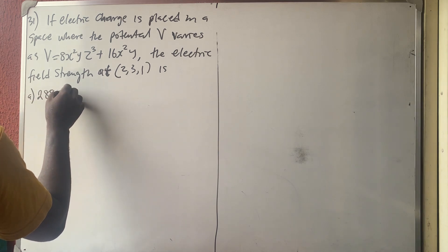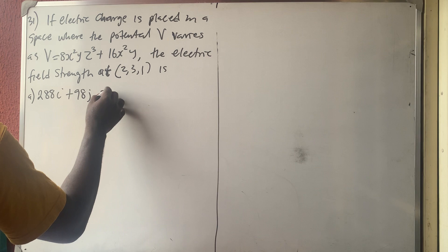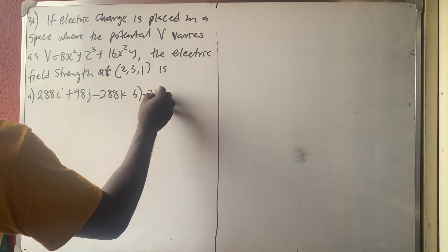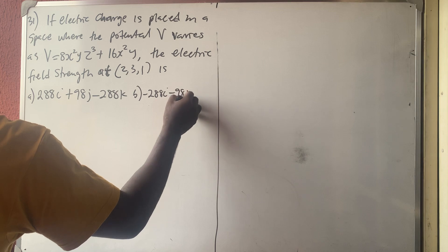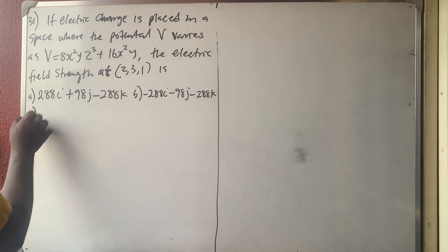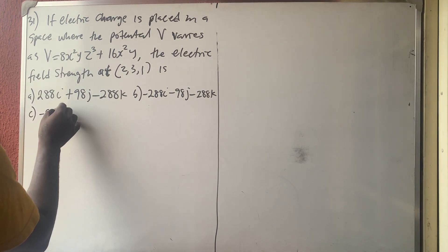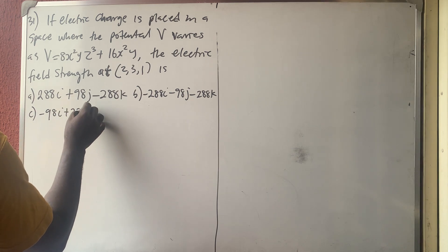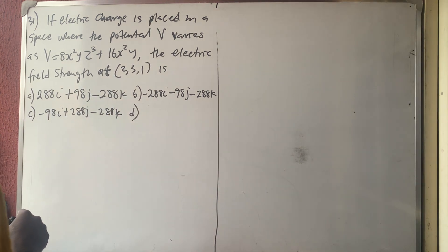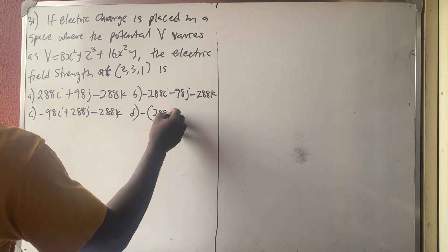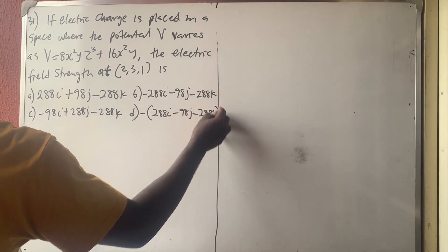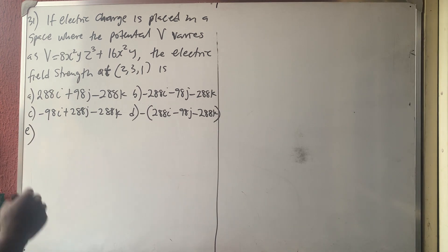The answer options are: A) 288i + 98j − 288k, B) −288i − 98j − 288k, C) −98i + 288j − 288k, D) −(288i − 98j − 288k), and E) none of the above.